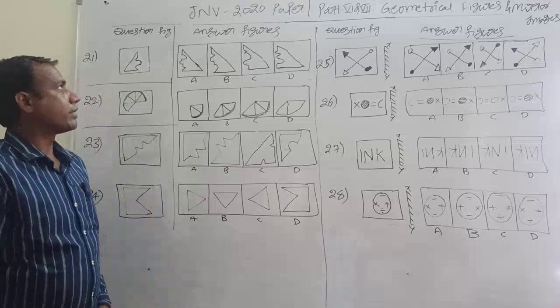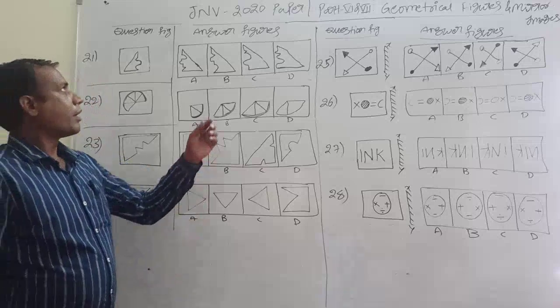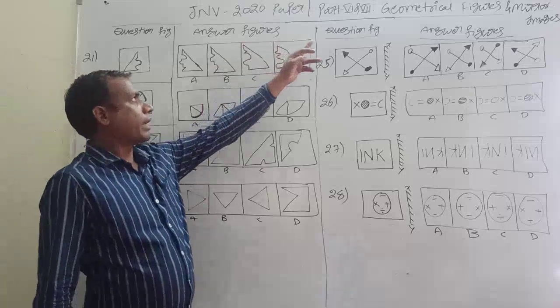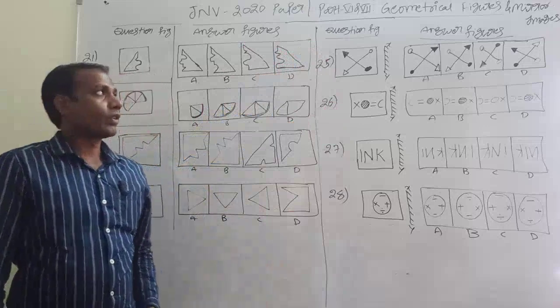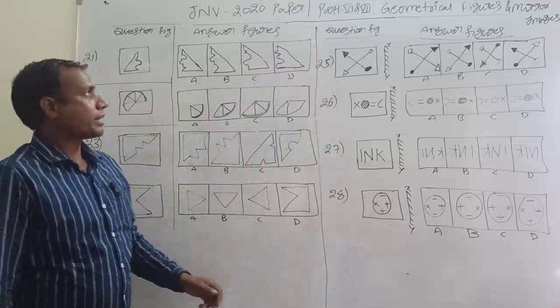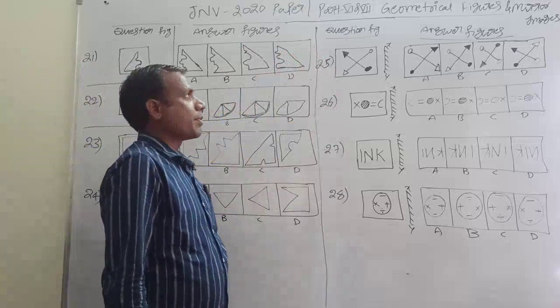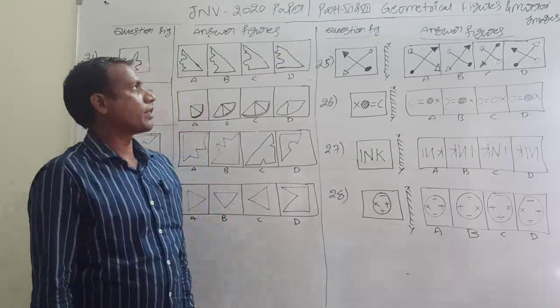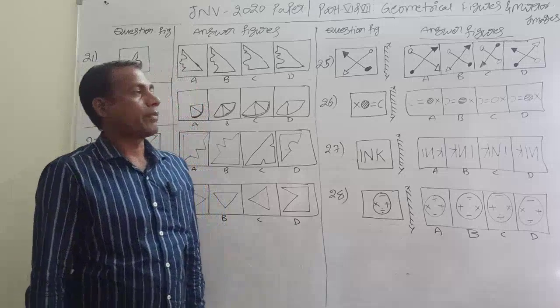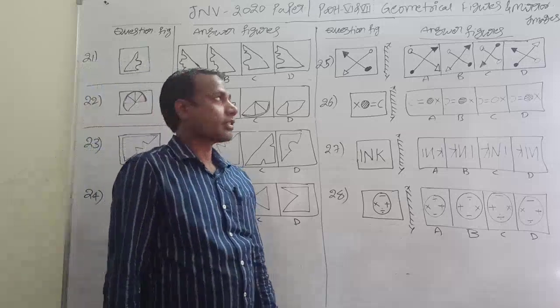Okay, next is part 6 and 7. Part 6 is geometrical figures and part 7 is mirror images.